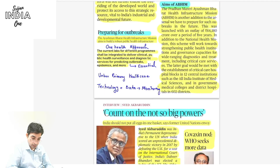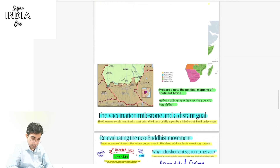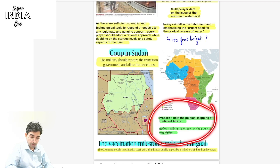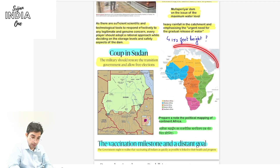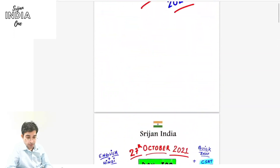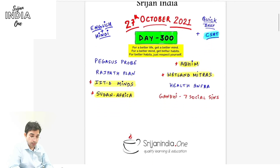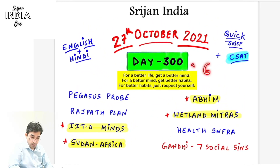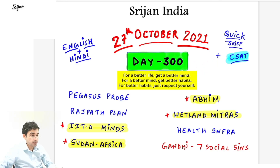Today's homework: prepare the political map of continent Africa — open your atlas and learn all the countries in the African continent. Also prepare on Wetland — Ramsar Convention, Montreux Record, and conservation of wetlands. These are today's two preparation tasks. This is 27th October 2021 — 300 days done, 65 days remaining. Thank you so much for watching — take care, study well, and be safe.